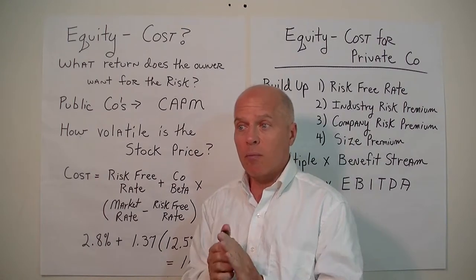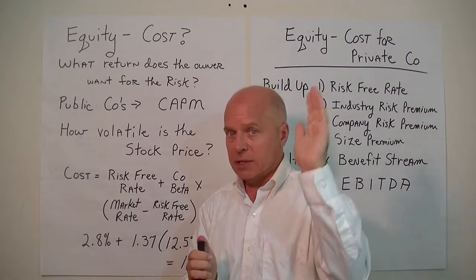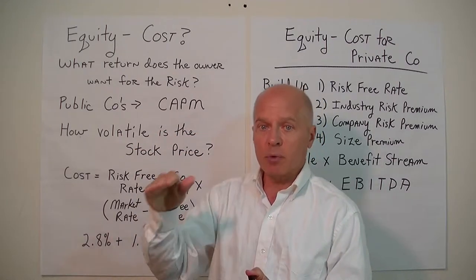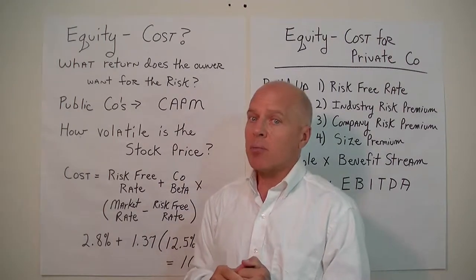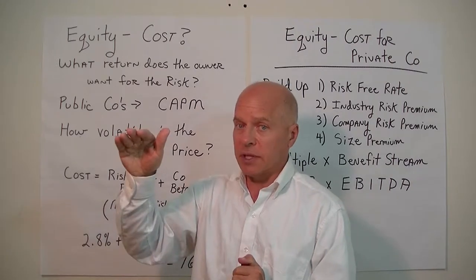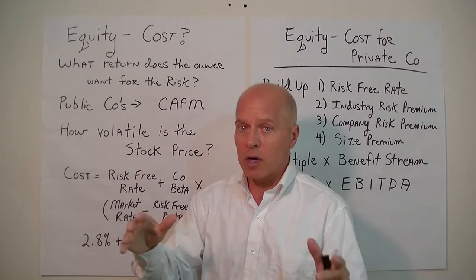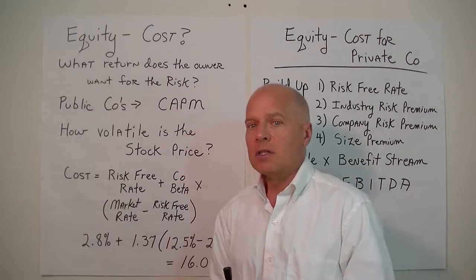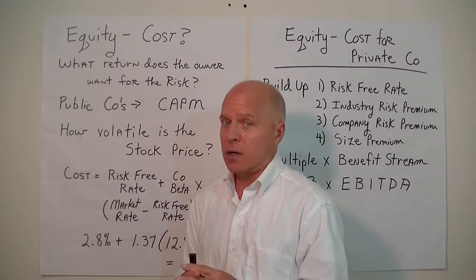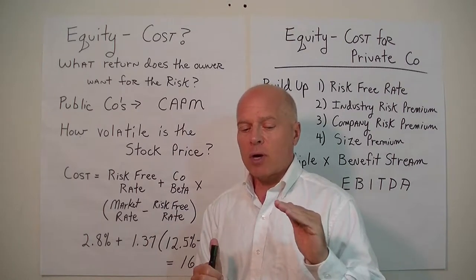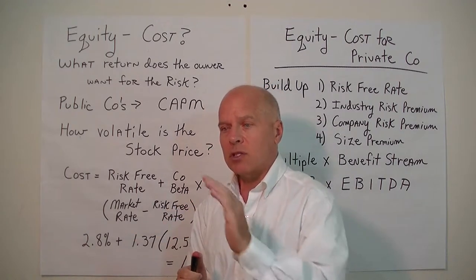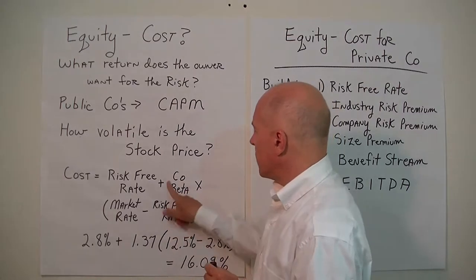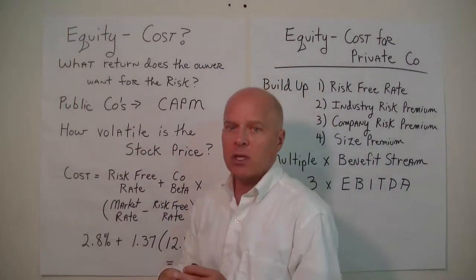If our stock price moves more than the overall marketplace — for example if the market went up 10% and our stock went up 20% — then we're more volatile, and our beta coefficient will be greater than 1. If our stock price doesn't move much in relation to the market, such as 0.5, then it would be very low risk. The beta coefficient basically measures the volatility of the stock price in relation to the marketplace.